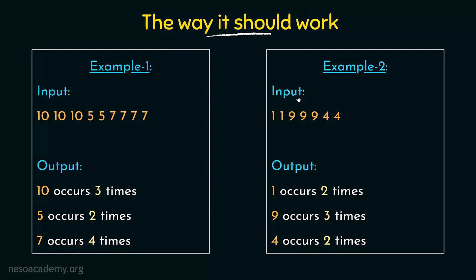Here is another example: if the user enters 1, 1, 9, 9, 9, 4, 4, it should say 1 occurs two times, then 9 occurs three times, and 4 occurs two times. So we see that it has to count the number of times the input has consecutively occurred — remember the word consecutive.